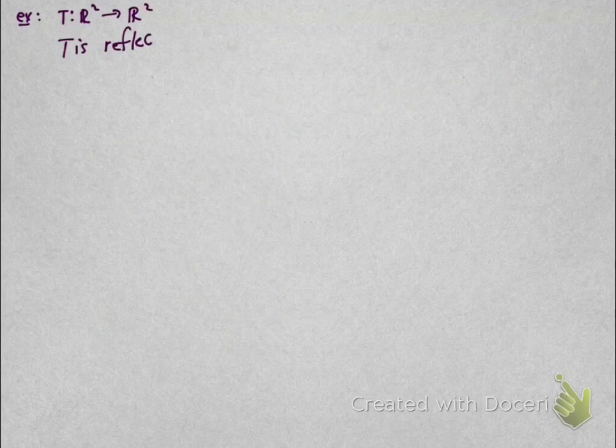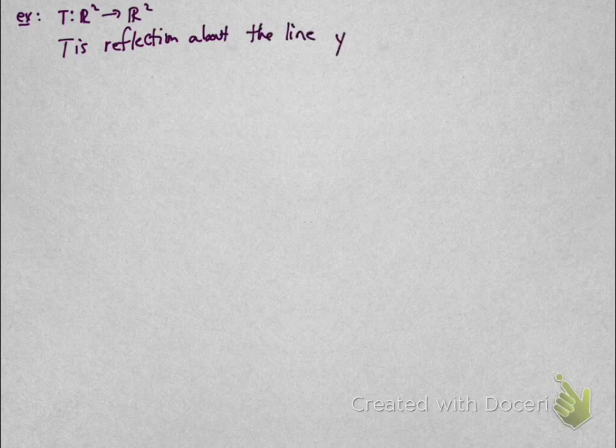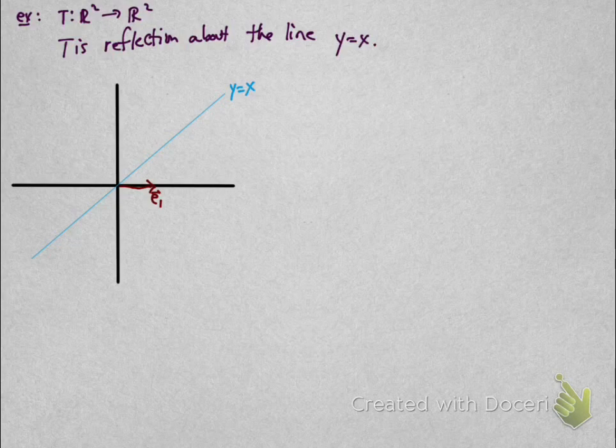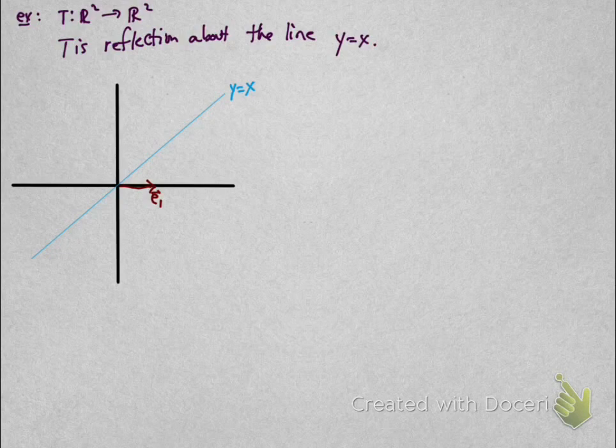Let's look at a more complicated example. Suppose T is the map from R^2 to R^2 given by reflection about the line y equals x. Using the theorem again, I need to understand what T does to vectors E_1 and E_2.